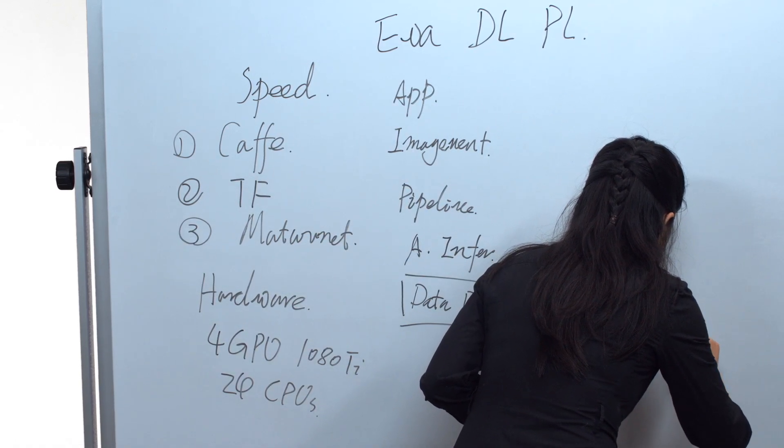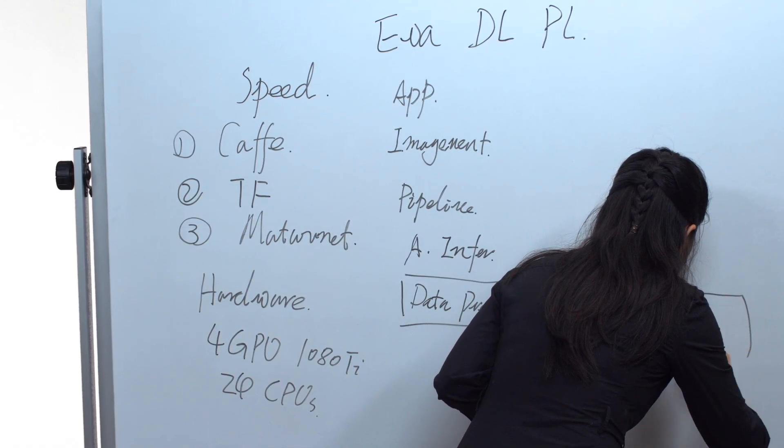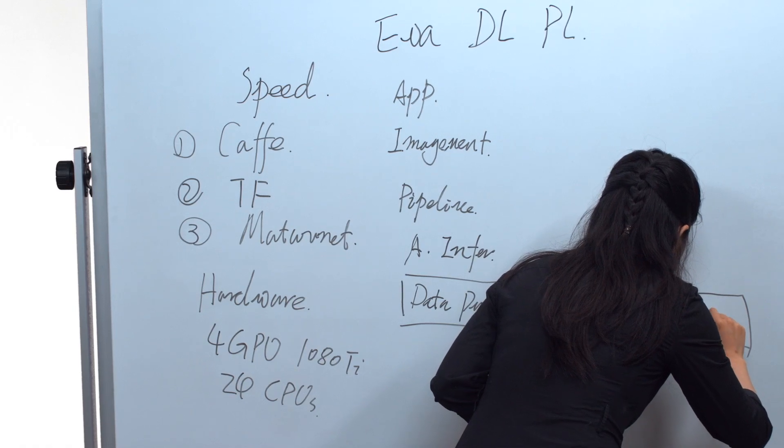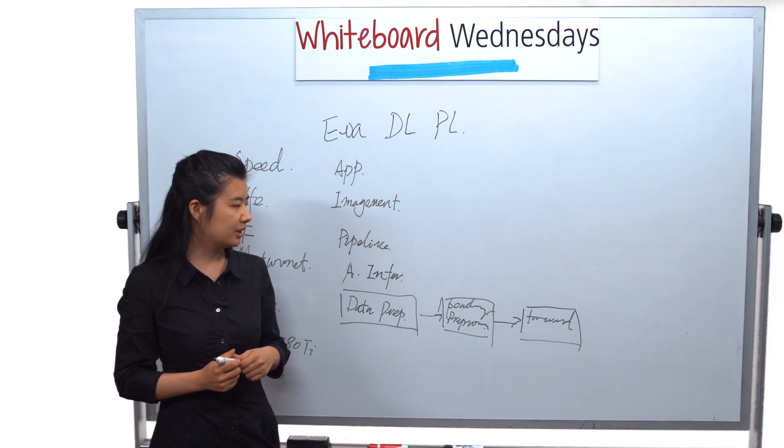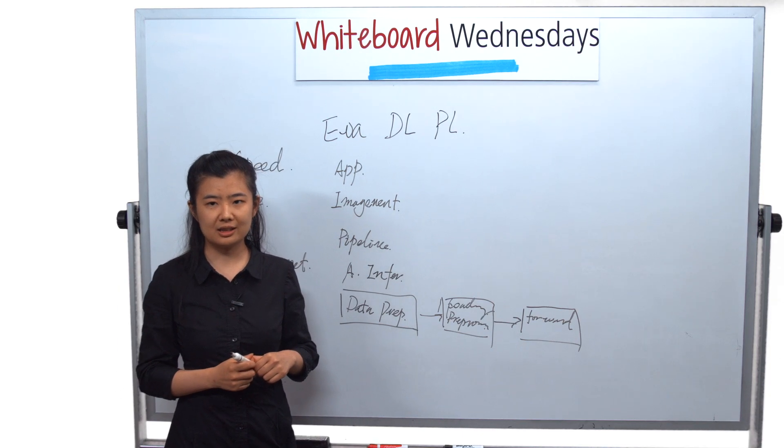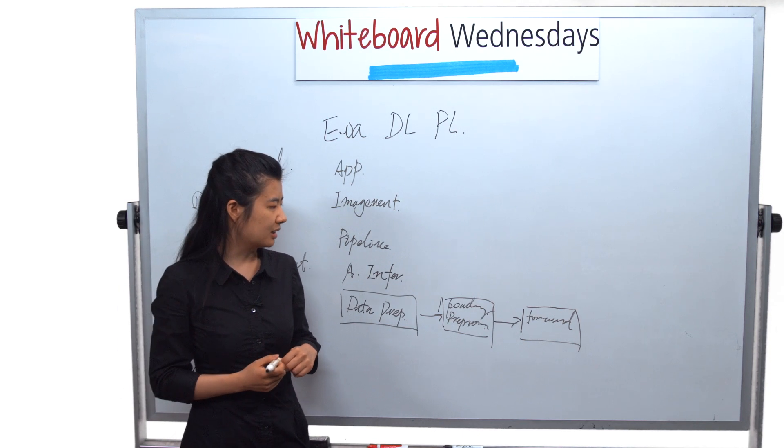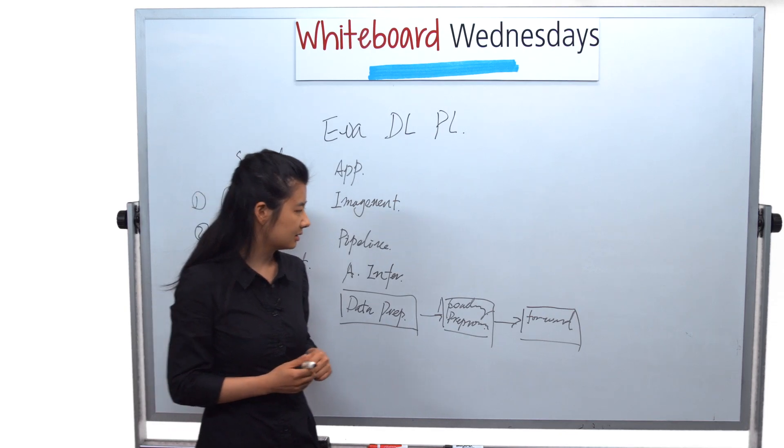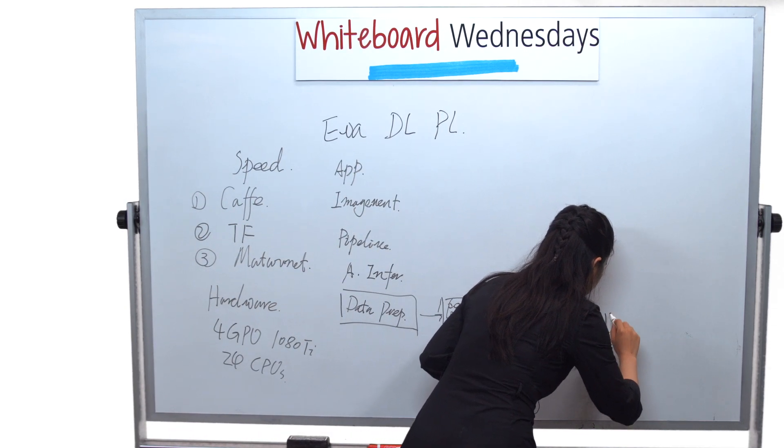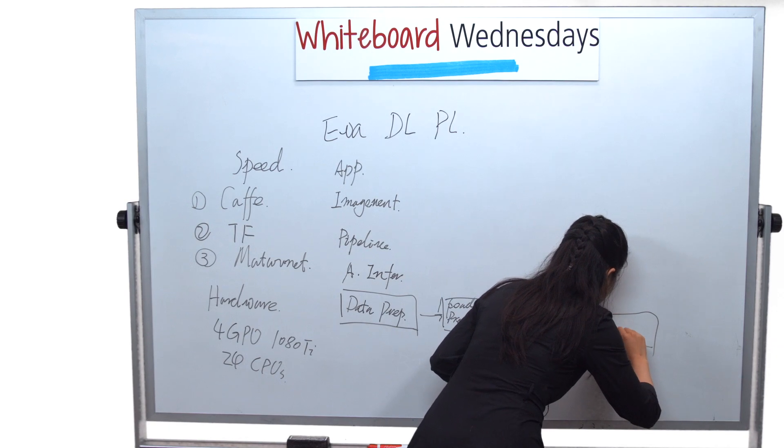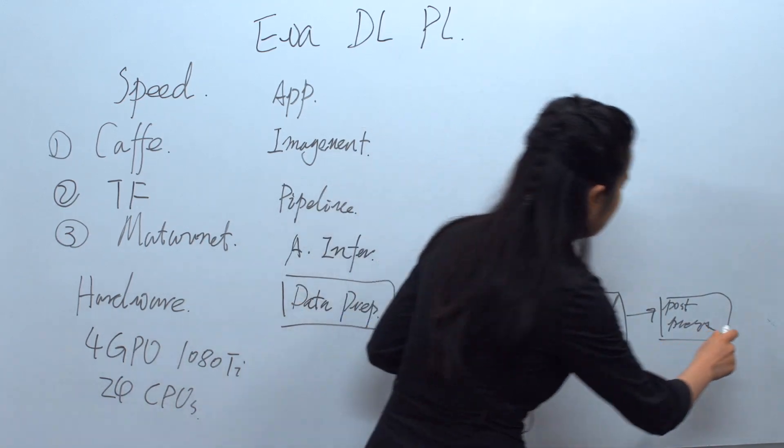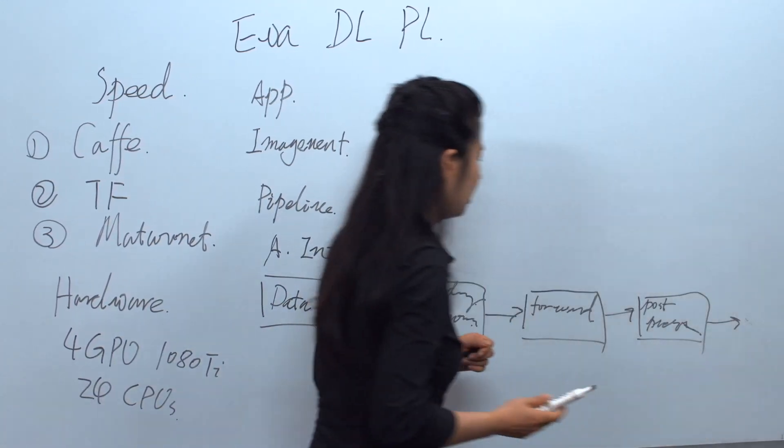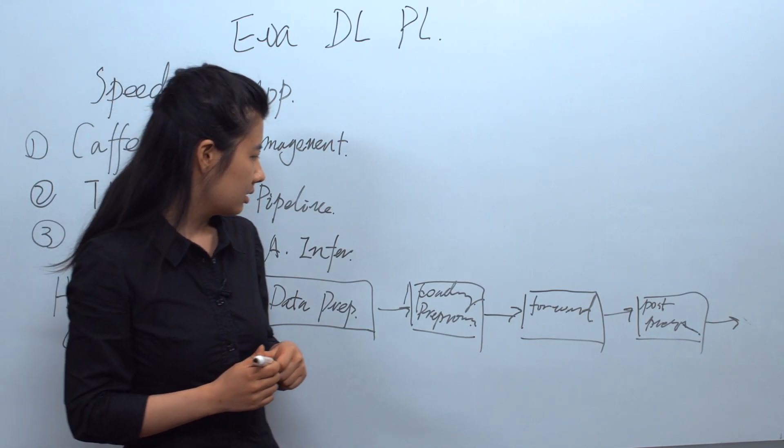Then, the data is ready to put into the network. We do the forward process. In the forward processing, we put data in and do the calculation and get the result on the last layer. After that, we collect the data in post-processing and transform it into labels that humans can recognize.